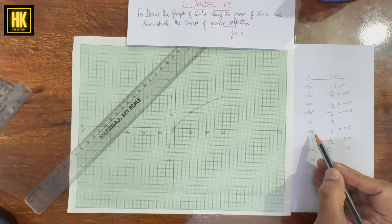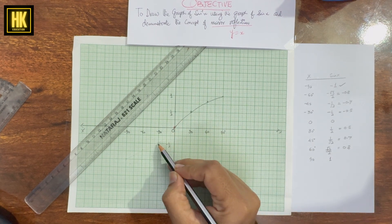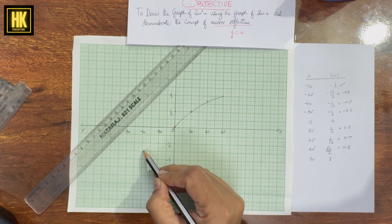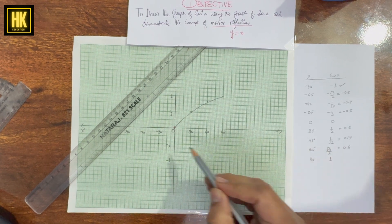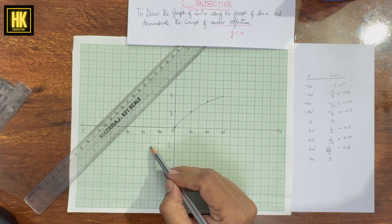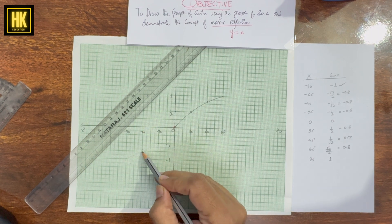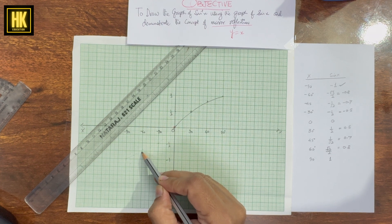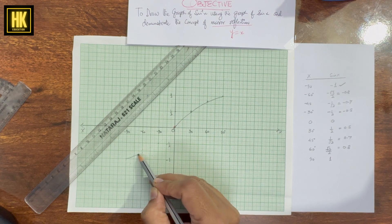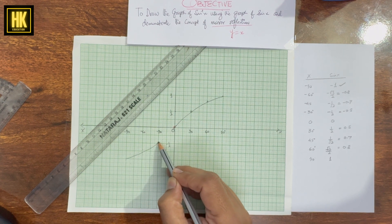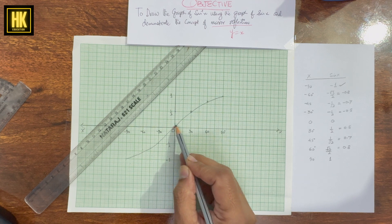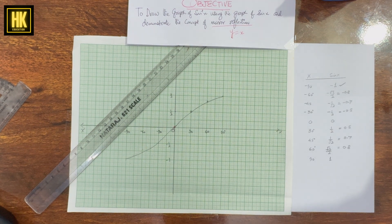Similarly on the other side: (0, 0), for minus 30° it is −1/2, for minus 45° it is approximately −0.7, and for minus 60° it is approximately −0.8. The graph extends symmetrically on the negative side.